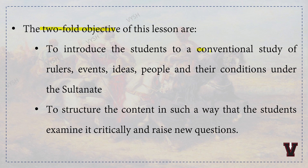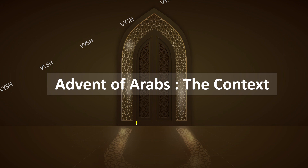The twofold objective is: first, to introduce students to a conventional study of rulers, events, ideas, people, and their conditions under the Sultanate; second, to structure the content so that students examine it critically and raise new questions. Rather than going very critically and analytically, we are going to do a conventional study of the rulers, events, ideas, and people.